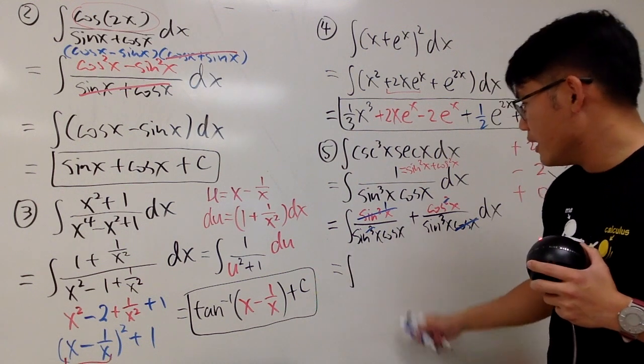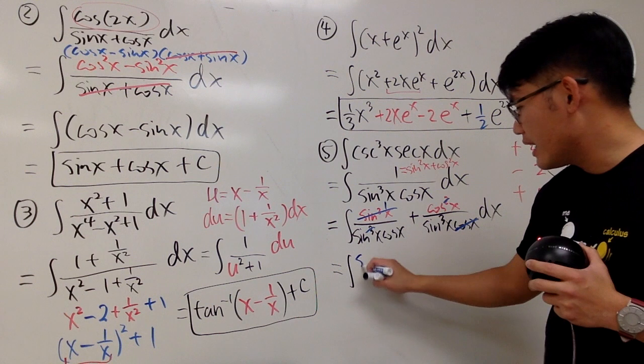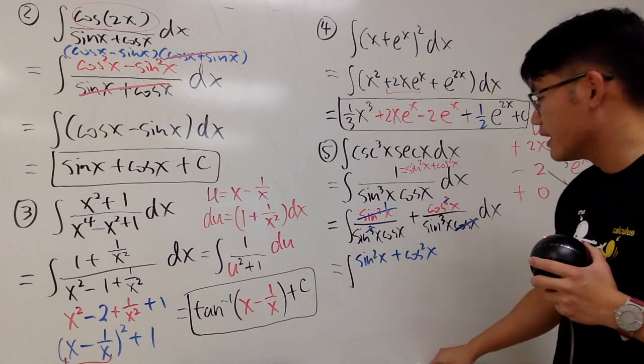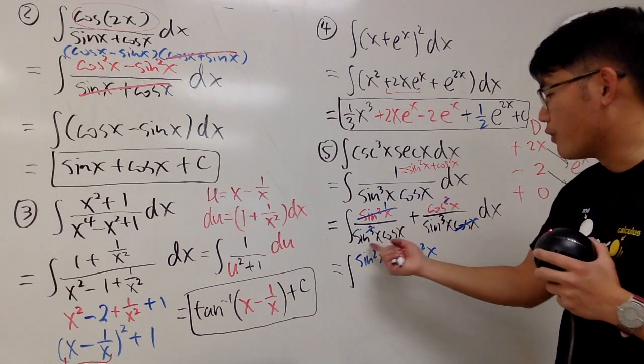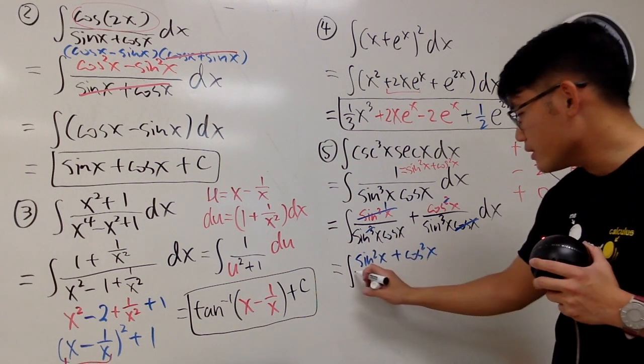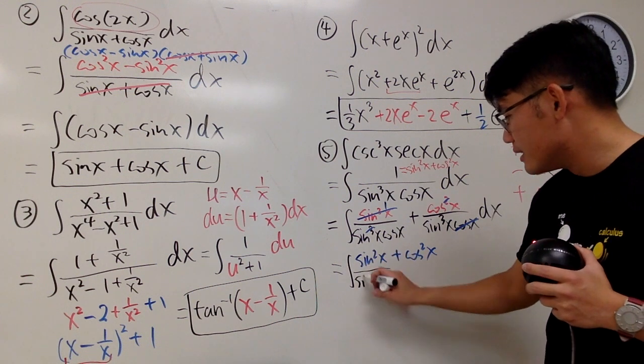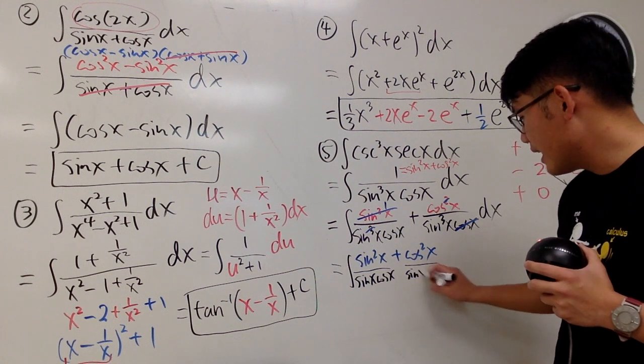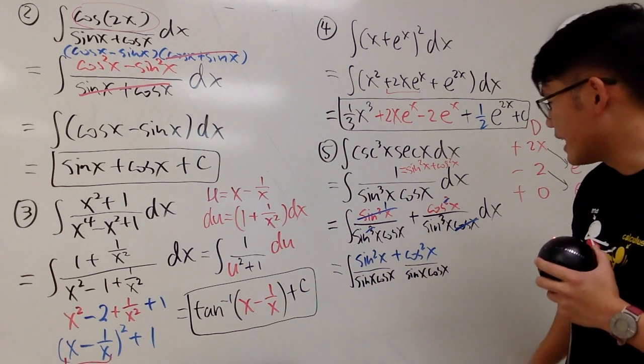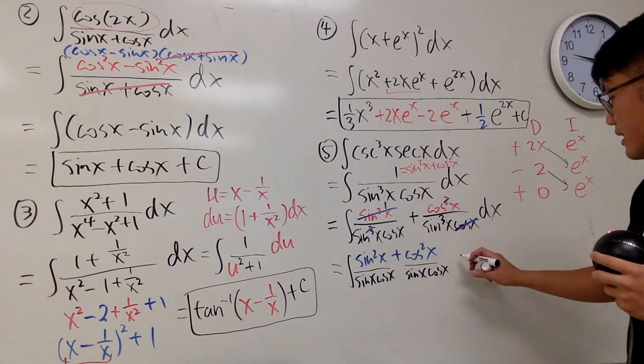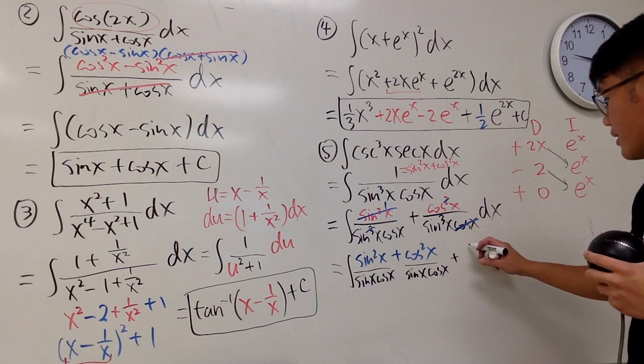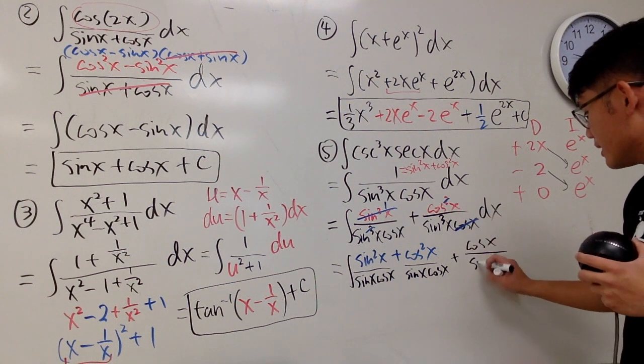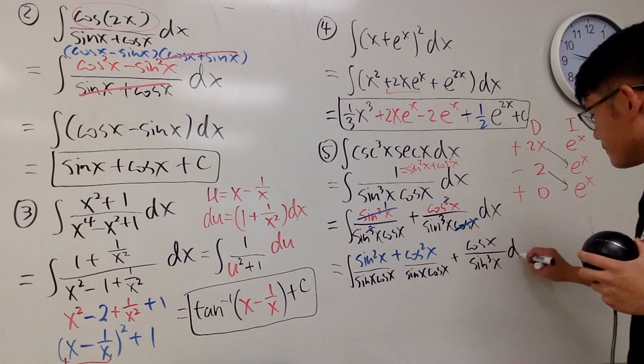This is the integral. I will write the 1 as, again, sine squared x plus cosine squared x, and then both of them are over this denominator. So I will just divide this by sine x cosine x, and then I will divide this by sine x cosine x. And let's see, I might as well put this down right here together, why not? Cosine x over, and this was sine to the third power x, like this.